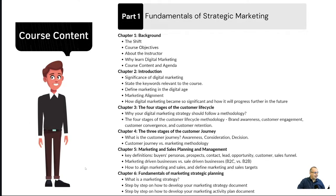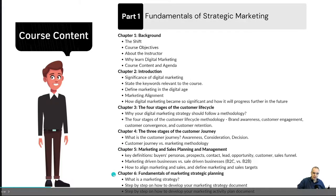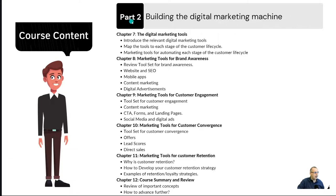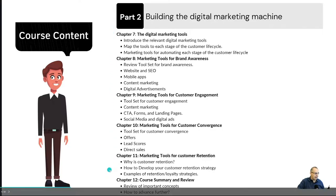The agenda for the entire course — we are currently in Chapter 5. Chapter 6 will be very interesting as it will be the heart of the course, covering the fundamentals of marketing strategic planning. Part 1 is about the fundamentals and strategy of marketing, while Part 2 covers building the digital marketing machine across five chapters from 7 to 11, each covering digital marketing tools to automate each stage of the customer lifecycle. Chapter 12 will be the course summary and review.